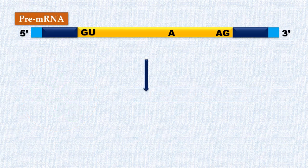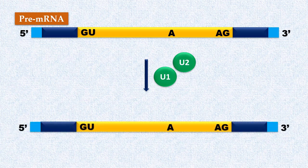First step involves the SNRPs U1 and U2. U1 binds to the 5' splice site of the intron. This binding is due to base pairing between the U1 RNA and the 5' end of intron. U2 binds to the A residue at the branch site.